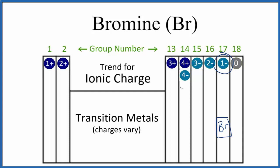That means it's gained an extra electron. It would gain that electron by bonding with another element — say something in group 1, which is 1 plus, like sodium. Sodium could lose that electron to the bromine; it becomes positive, the bromine's negative. They're attracted together because of opposite charges and form an ionic bond. So in answer to our question, bromine will form ions with a 1 minus ionic charge.